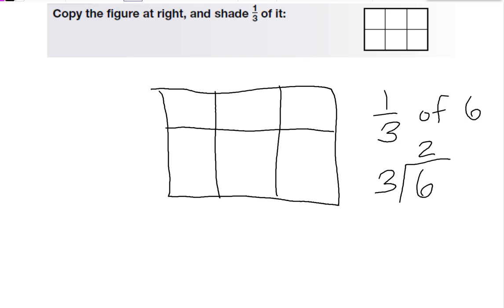So I'm going to take my shader and color in two parts. Okay. Now another way to do this is since it's asking for it in thirds, we can see that we have 1, 2, 3 columns, and I need to fill in just one of them. That's another way to look at it.